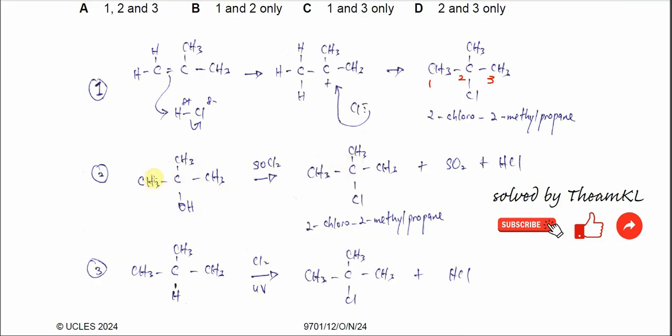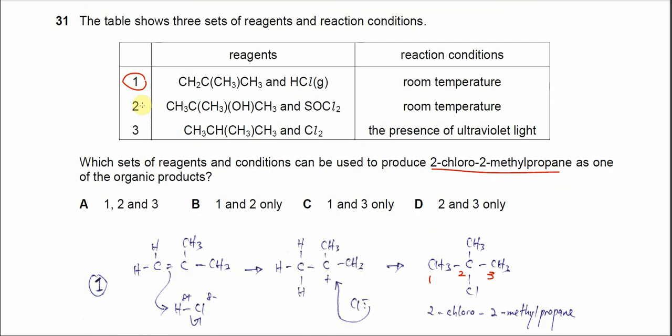This is the structure of the alcohol. It's the same as just now. And of course, SOCl2 will form SO2 and produce HCl. So the second set also can produce 2-chloro-2-methylpropane. How about the last one?